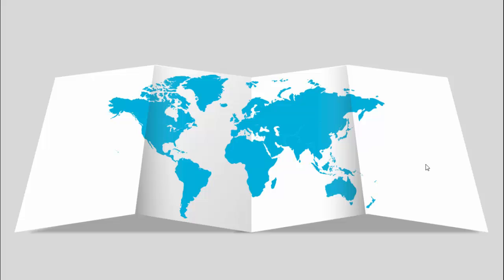In today's tutorial I am going to show you how to create a flat world map infographic slide in PowerPoint. I have created a folded paper design and put a world map onto it with a shadow effect. On click it will show options, and you can recolor the map — it is fully editable.